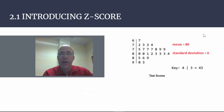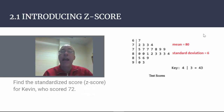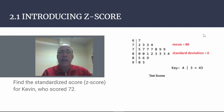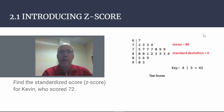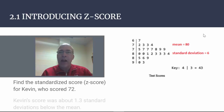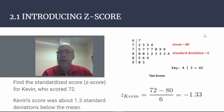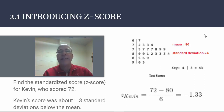How about a different student, Kevin? He scored a 72. What's his z-score? The first thing to note is that Kevin is definitely below the mean, so his z-score is going to be negative. He is more than one standard deviation away from the mean — more than 6 away from 80. Using the formula, Kevin is about 1.3 standard deviations below the mean, giving him a z-score of negative 1.3.